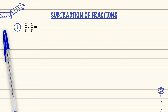Question number 1: 2 over 3 minus 1 over 3. As we can see, the denominator is the same. So we can subtract the numerator.